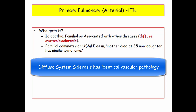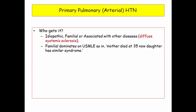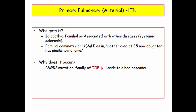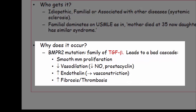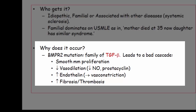Insofar as primary pulmonary hypertension and the NBME, familial will appear most commonly as in the mother died from a progressive pulmonary disorder, and now the daughter is short of breath. There is a defect in the bone morphogenetic receptor protein. This protein is in the family of transforming growth factors — they will ask about the disease mediator, TGF-beta. The ways to occlude a vessel include smooth muscle proliferation, loss of vasodilation, increased vasoconstriction, and ultimately vessel fibrosis with secondary thrombosis.